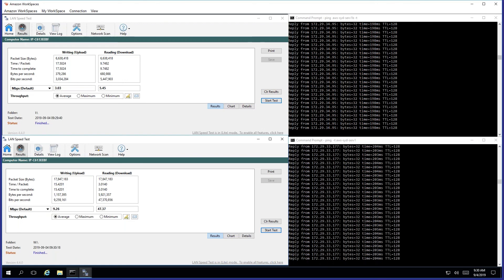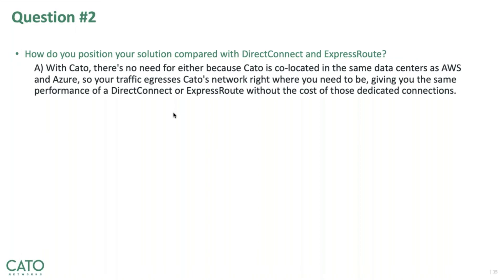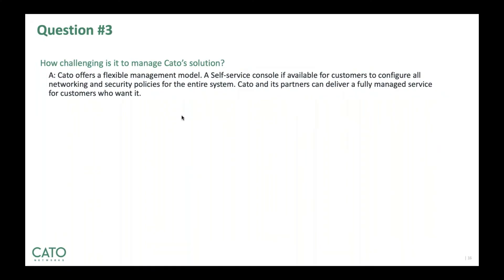Thanks for that, Sean. Now I've got another question from Matt. Matt's asking: how do you position your solution compared with Direct Connect and ExpressRoute? With Cato, there's no need for either, because Cato is co-located in the same data centers as AWS and Azure. So your traffic egresses Cato's network right where you need to be, giving you the same performance of a Direct Connect or ExpressRoute without the cost of those dedicated connections. Our next question is from Rich. Rich wants to know if Cato offers any management services. That's a great question we get asked about all the time. Cato offers a number of managed services to assist with everything from rapid site deployment to threat detection to day-to-day management. You can layer in one or all of our services depending on what you need, and you always have the ability to make changes on your own.